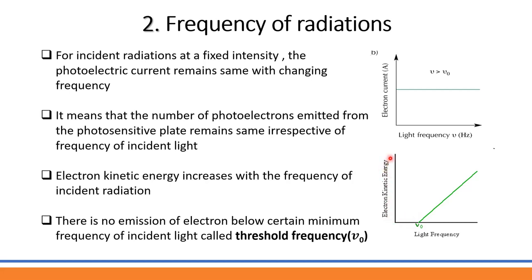When frequency increases, the kinetic energy of the electrons increases. For a metal, the minimum frequency required for electron ejection is called the threshold frequency. There is no emission of electrons below this certain minimum frequency of incident light, which is called threshold frequency. If the incident light frequency is above the threshold frequency, the photoelectric effect is observed.